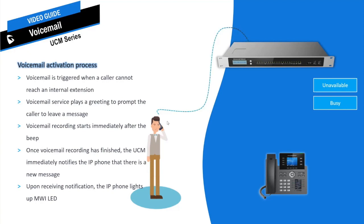When the intended recipient of the call is busy — for example, if an extension has call waiting disabled, it will only be able to have one call at a time — during an active call, when there is a second incoming call, the extension will show busy status and the call will be forwarded to voicemail automatically.